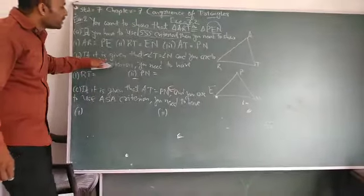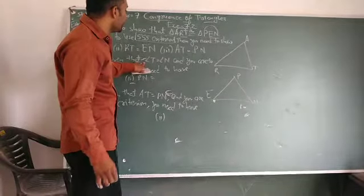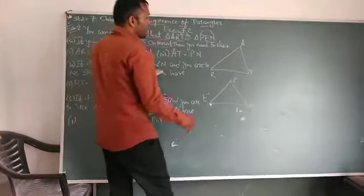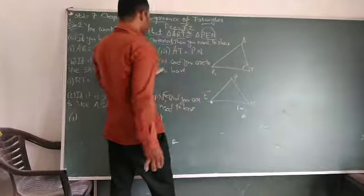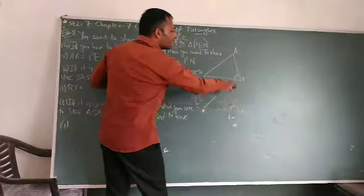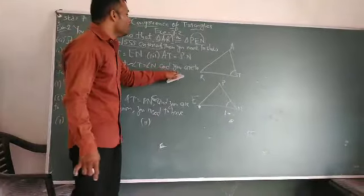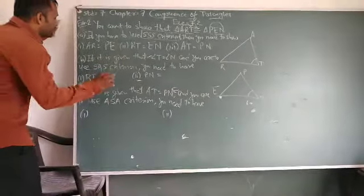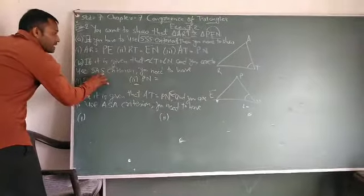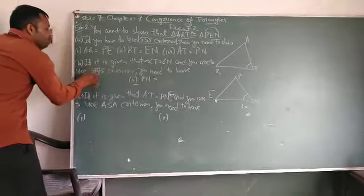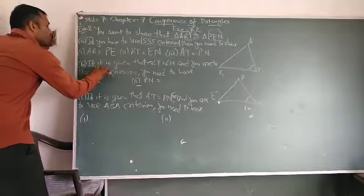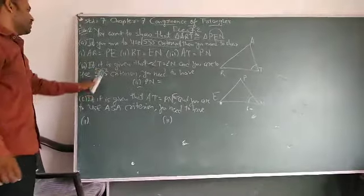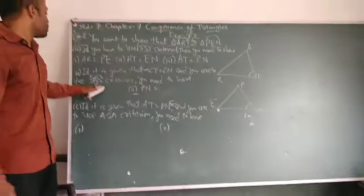If it is given that angle T is equal to angle N, see here, angle T is equal to angle N. These two angles are given equal. To use SAS criterion, see here, angle R is given. So two sides we have to find. Included angle R is given, so two sides we are going to find.